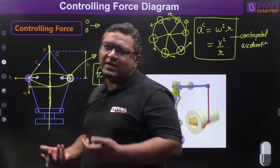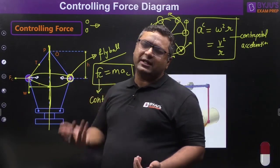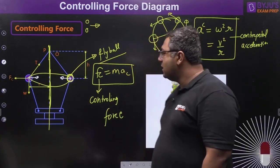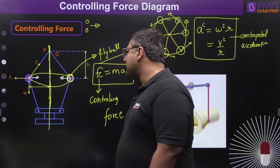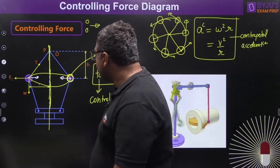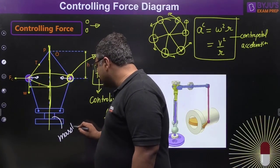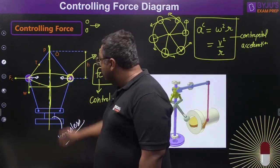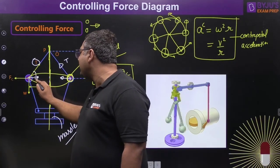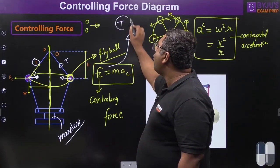We can take either centripetal or centrifugal depending on the frame of reference — inertial or non-inertial. Since we analyze with respect to Earth, we use centripetal force, which is real; centrifugal is a pseudo force. In the Watt governor, the sleeve is massless, so there is no tension in the link, but there is tension in the arm. That arm tension provides the centripetal, i.e., the controlling force.